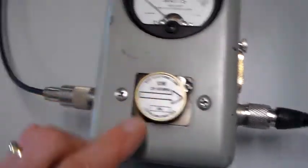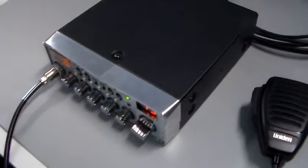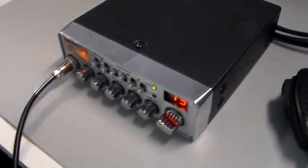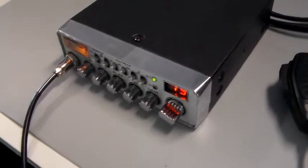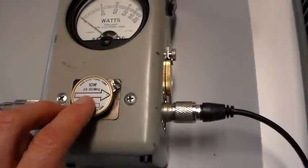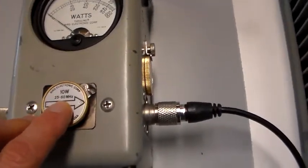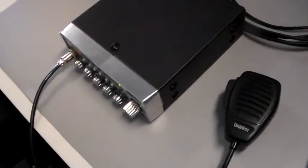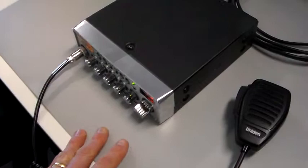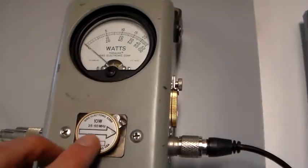That frequency range is appropriate for this transmitter because it is a citizen's band transmitter, and the CB frequency range is about 27 megahertz. So 27 megahertz falls within the 25 to 60 megahertz rating of this plug, so that is appropriate. So is the power rating. I'm only expecting a few watts at most out of this transmitter, and this is rated for a maximum of 10 watts.